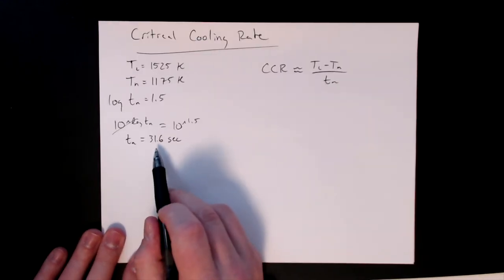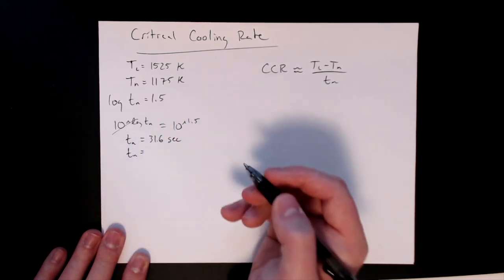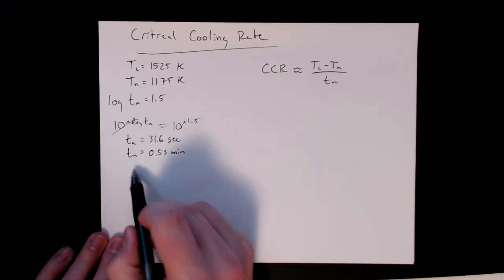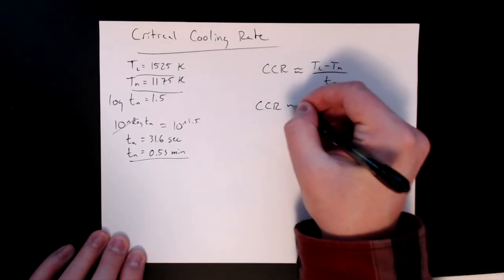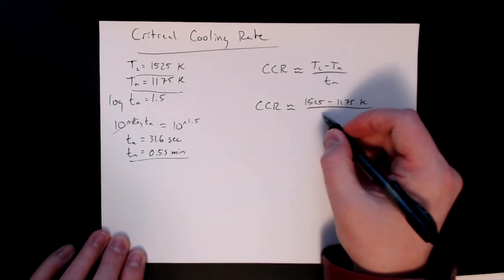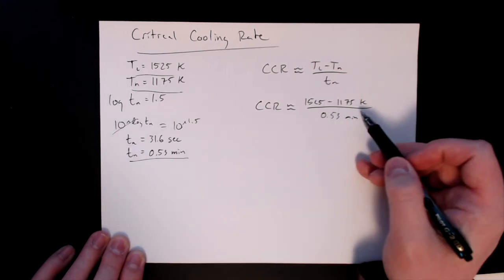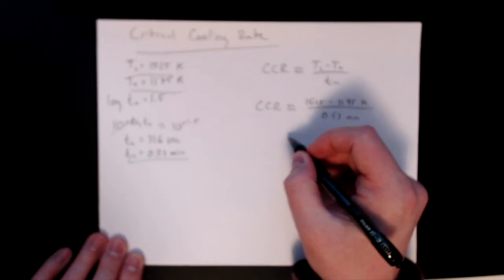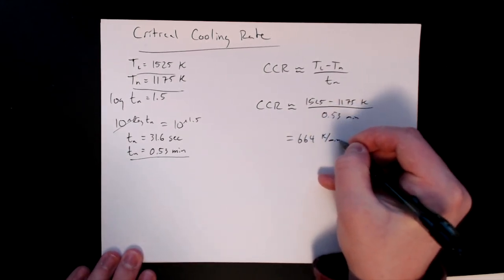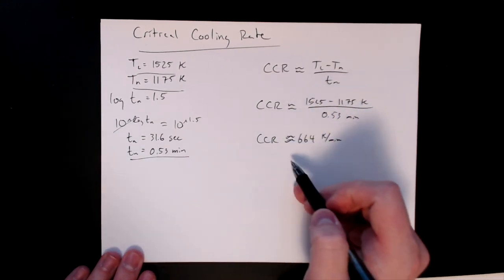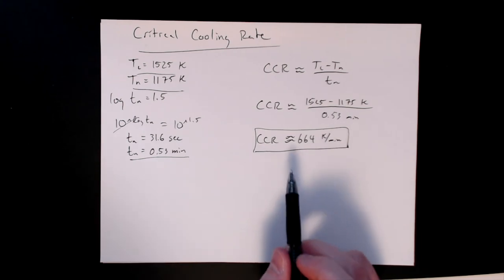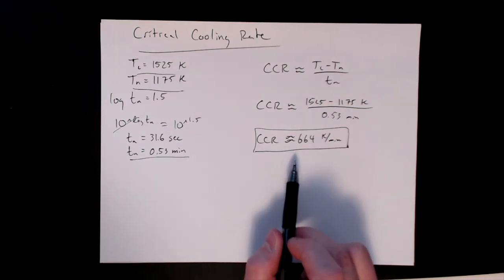The units here were seconds, but I'm going to turn this into minutes, so that's about 0.53 minutes. I've got all my values here, so I'm going to plug that in: 1525 minus 1175, both of those were in kelvin, divided by 0.53 minutes. My cooling rate is going to be in kelvin per minute, and when I do that, that gives me a value of approximately 664 K per minute. This was an approximate from the textbook, so this is the critical cooling rate we get. Let's go back to the slides for a second and get some perspective for this 664 number.